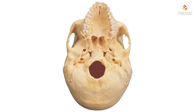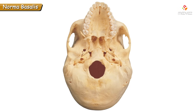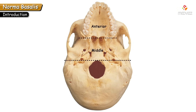Welcome back to osteology classes. Today we will learn about norma basalis — observation of the skull from the inferior aspect without mandible. To learn norma basalis in an easier way, we can divide it into three parts: anterior, middle, and posterior.